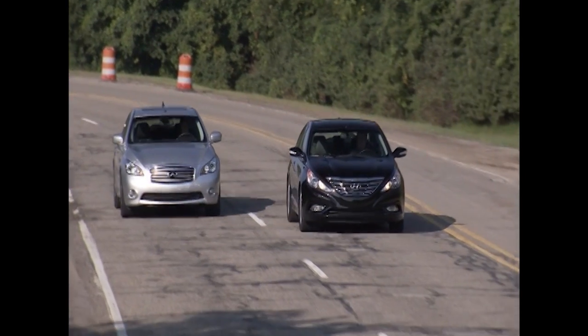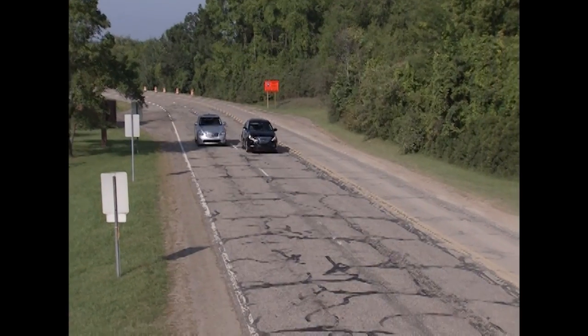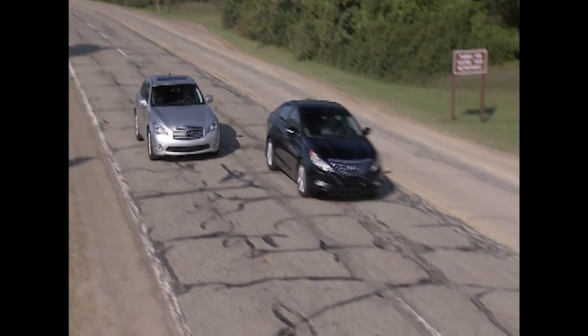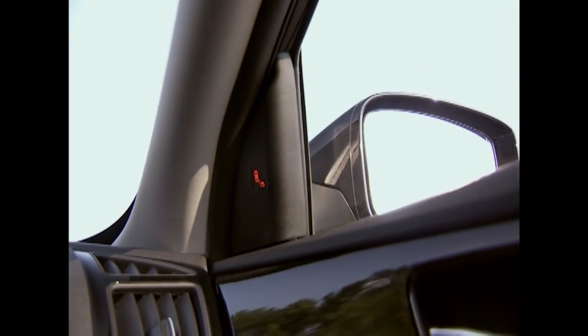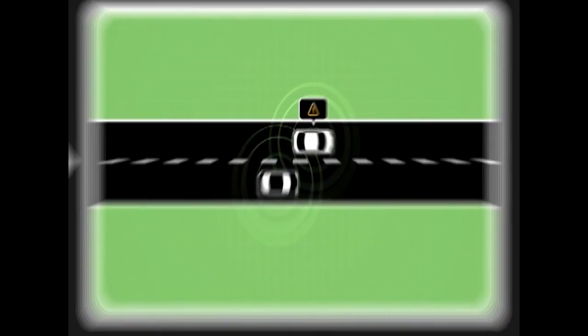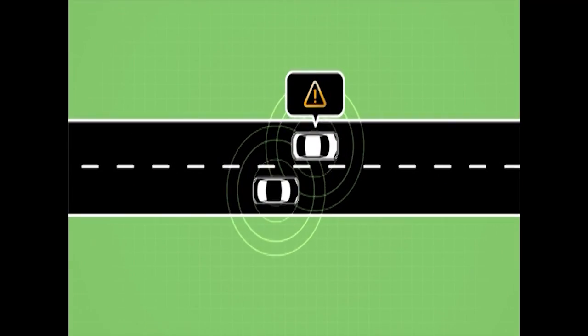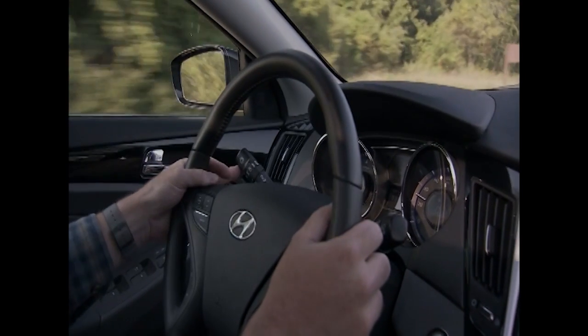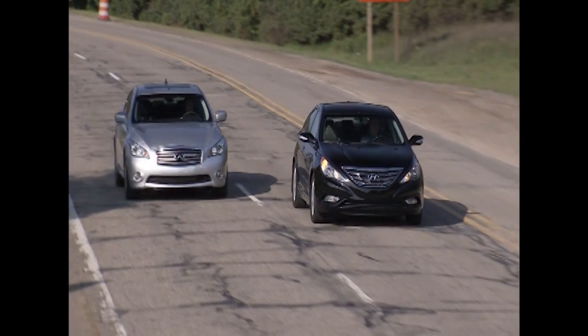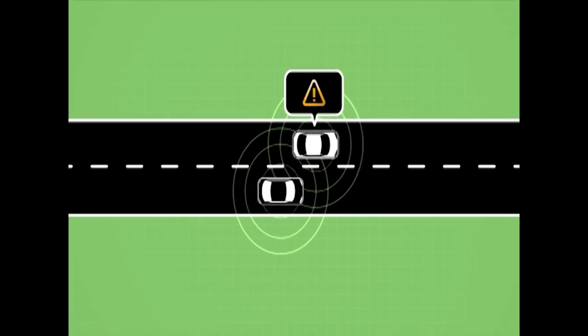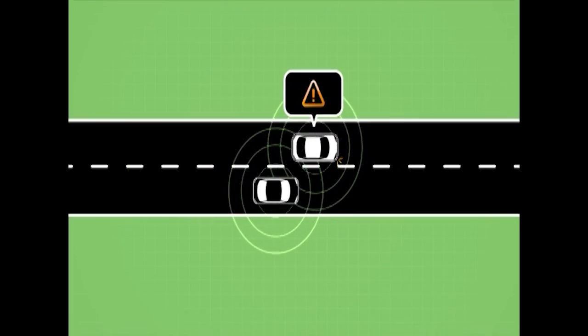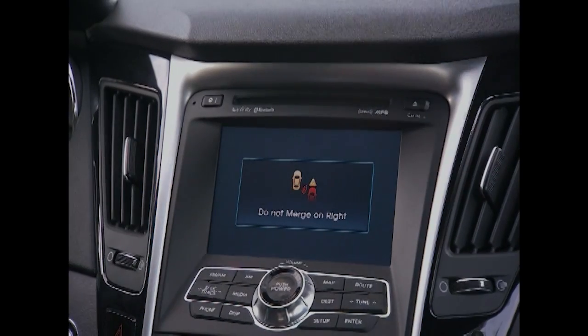The Blind Spot Warning Safety Application, or BSW, lets a driver know that there's a vehicle that may not be visible positioned in the driver's blind spot. Because of V2V communication, a blind spot advisory is issued to make you aware of the presence of this vehicle. Should you attempt a lane change with the vehicle still in your blind spot, this advisory will escalate to a warning, letting you know that it is not safe to change lanes.